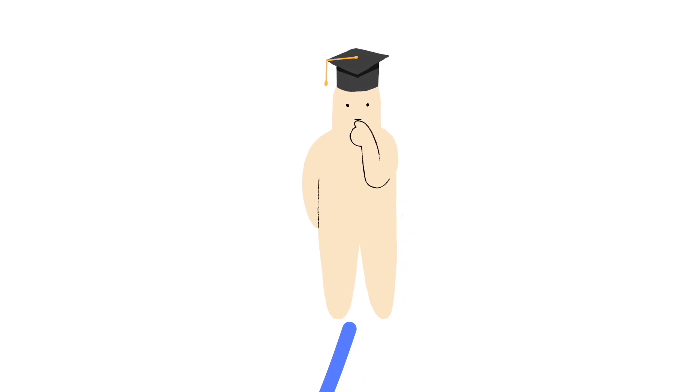The opposite of the Dunning-Kruger Effect is imposter syndrome, which you can learn more about by clicking the link above.